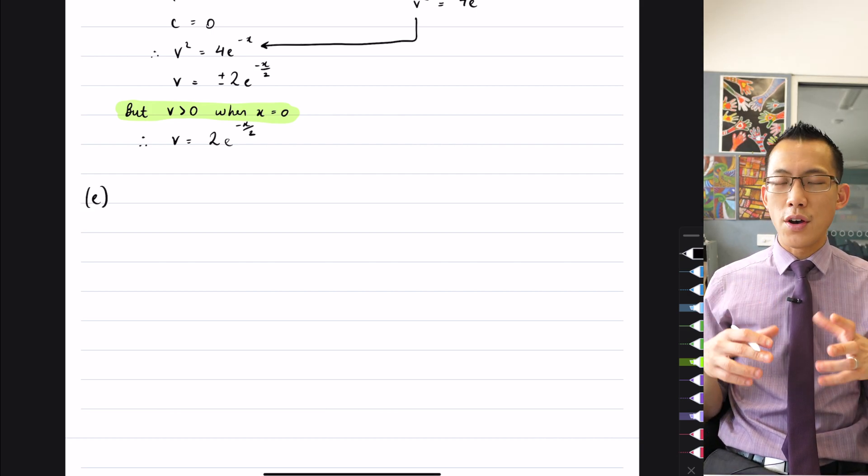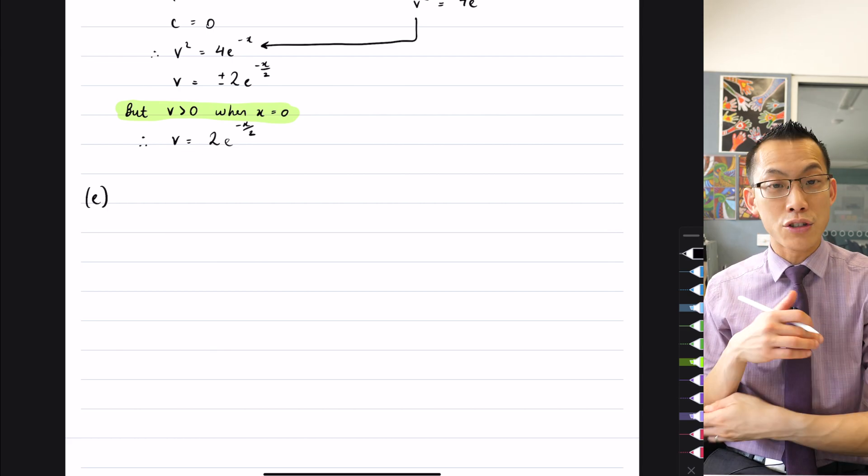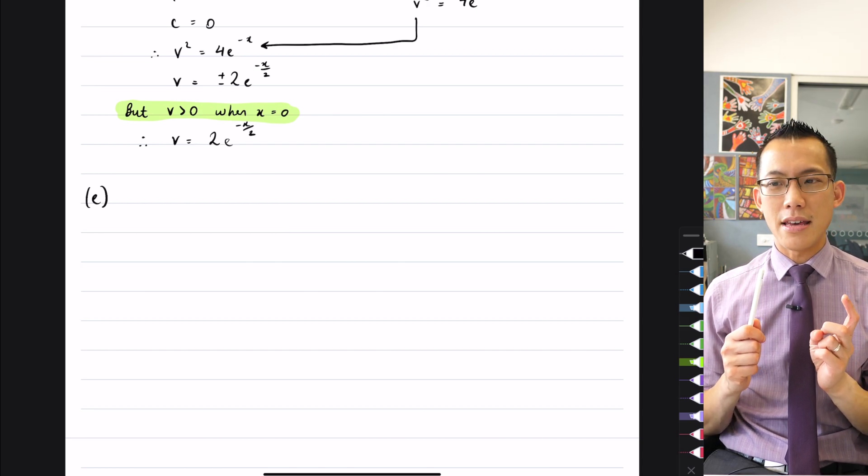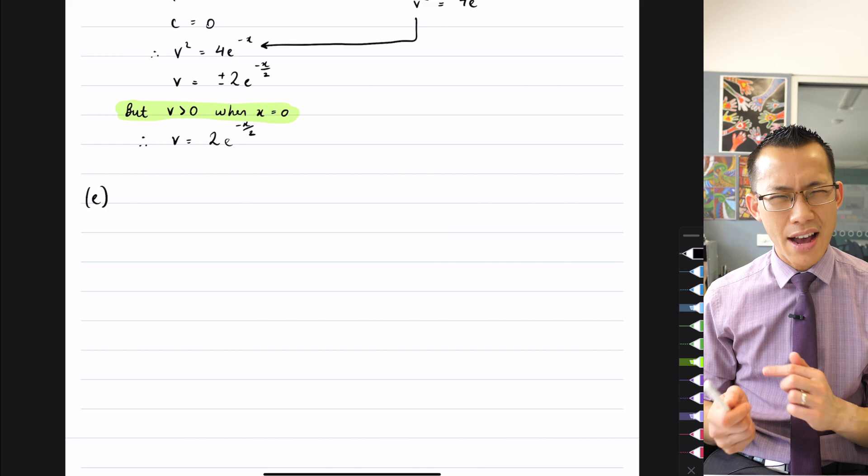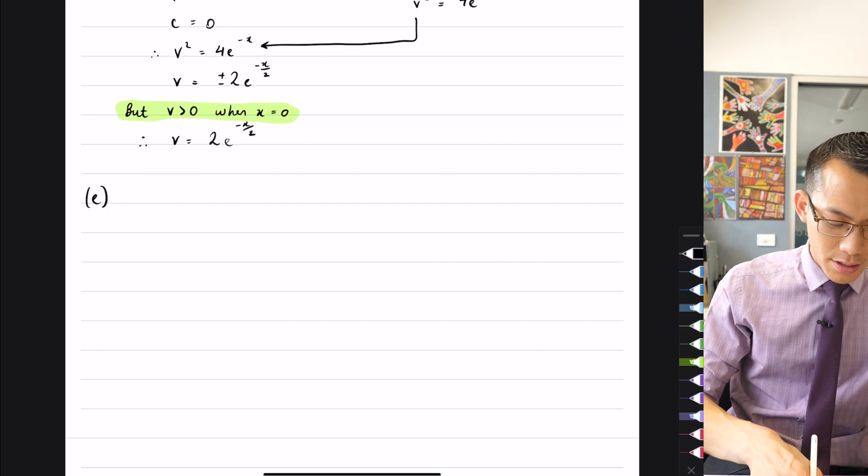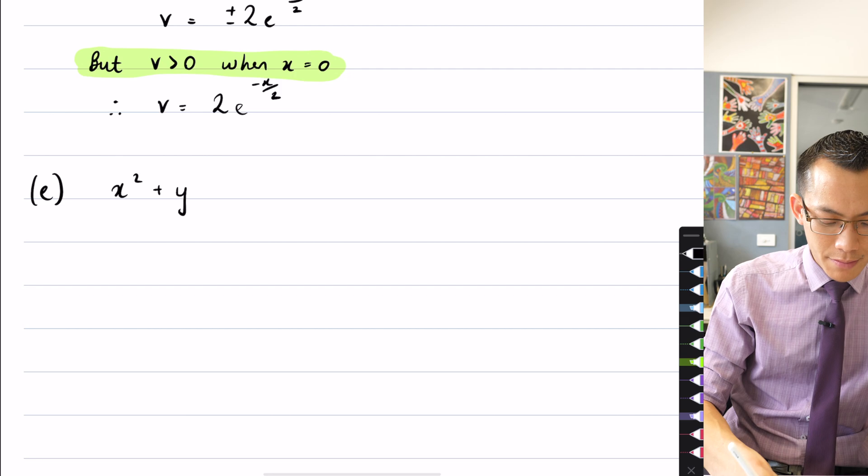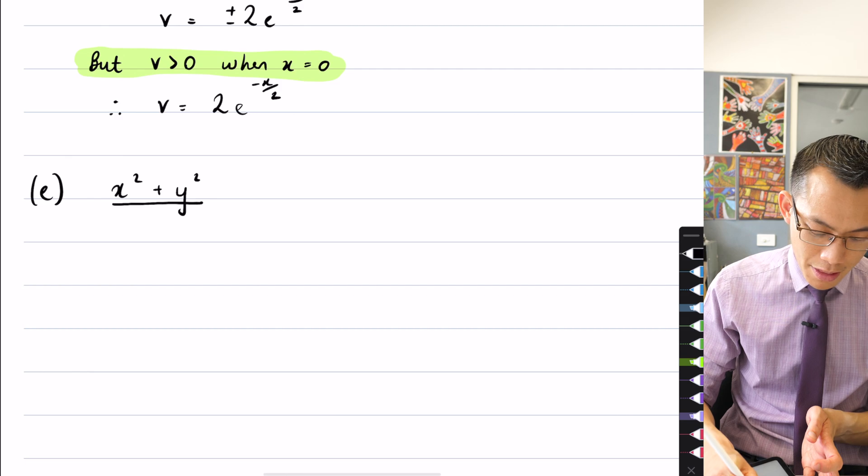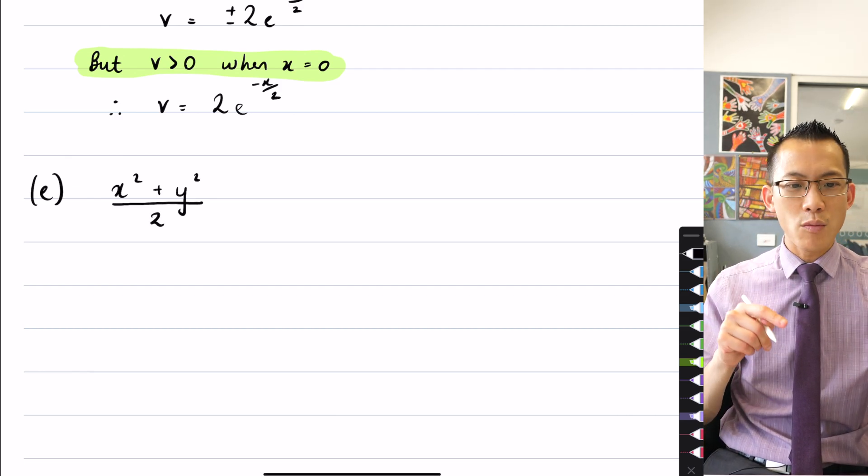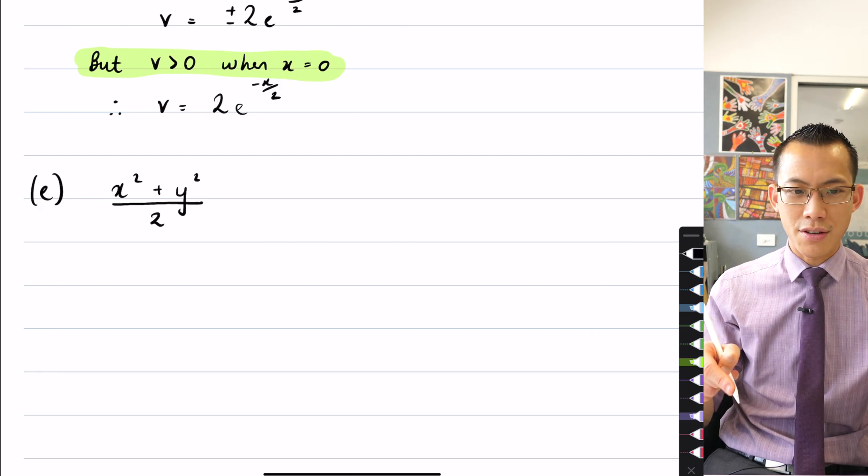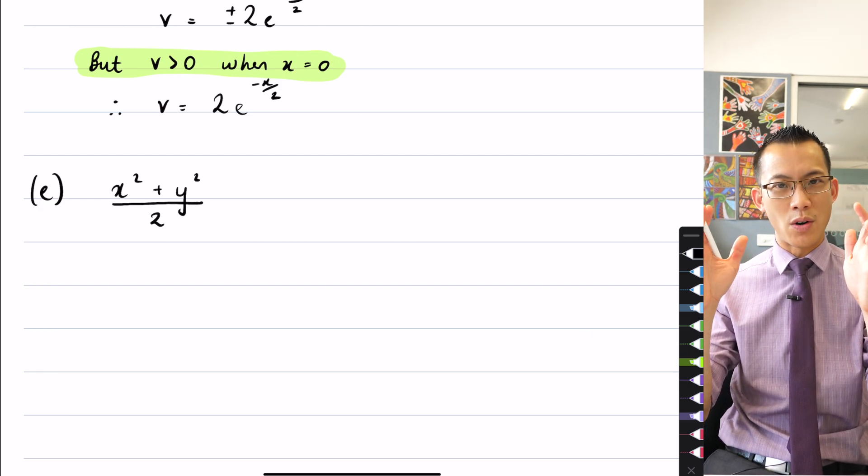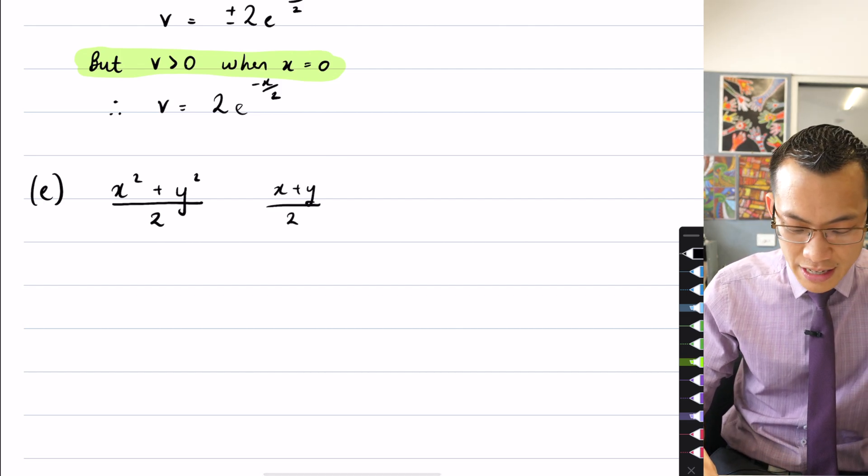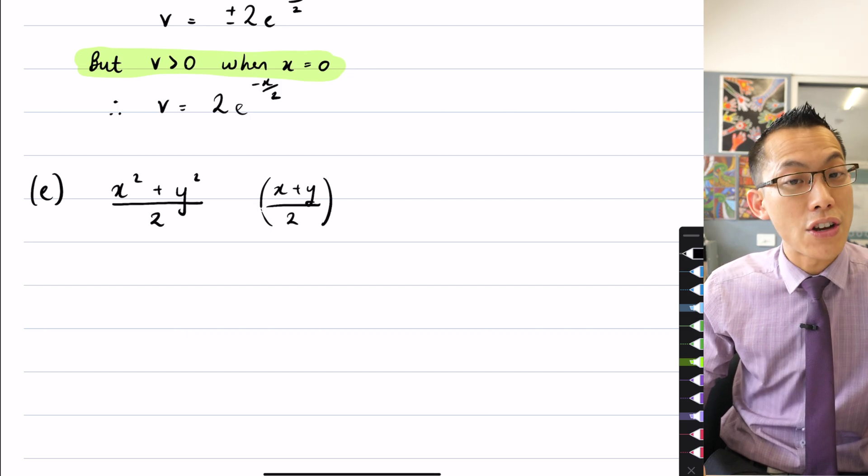The first thing is I need to convert all of that verbal language into an algebraic inequality because then I can start manipulating it. So the first thing the question said was about the average of the squares. So X squared plus Y squared, when you want to find the average of those two numbers, you add them and then you divide by two, so that is the average of the squares. And then what we want to do is square the average, so that's taking the average between X and Y is X plus Y on two, and then we need to take that whole thing, the entire average, and square it.